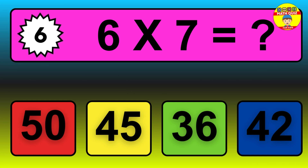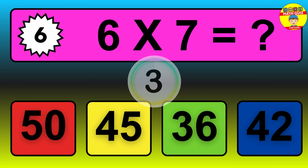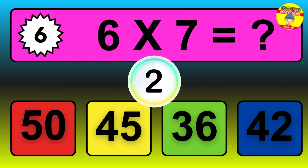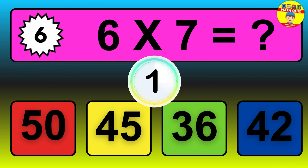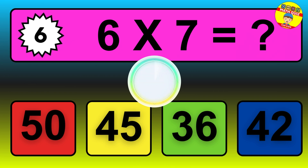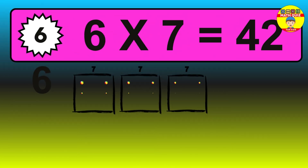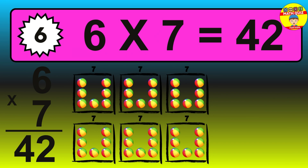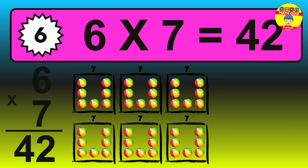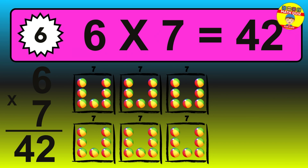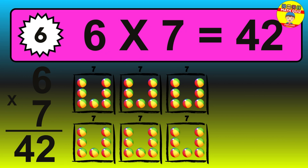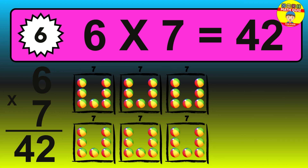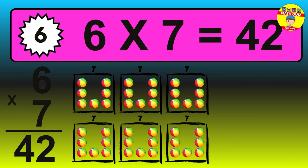Question 6. 6 times 7 equals what? The answer is 6 times 7 is 42. To calculate, we have 6 groups with 7 balls each one. So, how many balls do we have? 42 balls.